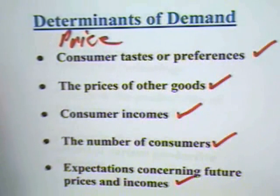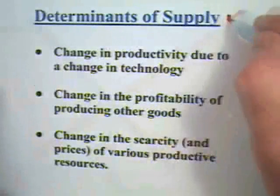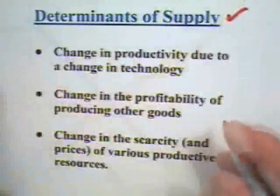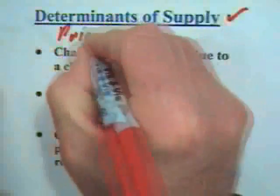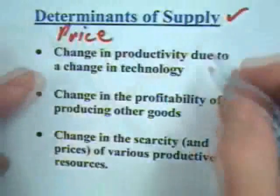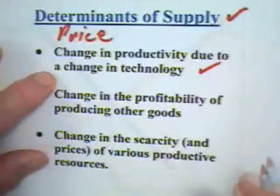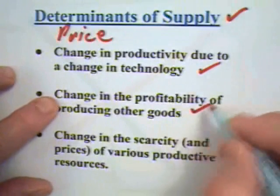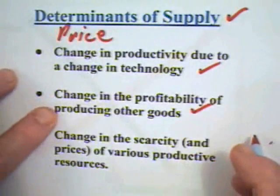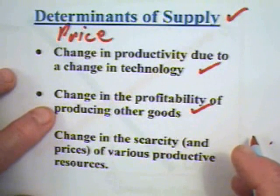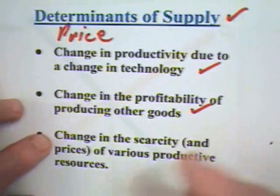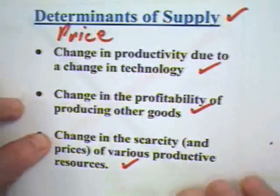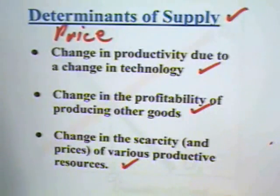We've covered those issues in the textbook and other video modules. We've also noted that there are determinants of supply other than price. Things like a change in productivity can influence the level of the supply curve. The change in profitability of producing other goods can influence the supply of any particular good because it changes the cost of production. A change in the scarcity of various resources can influence the supply of the good.